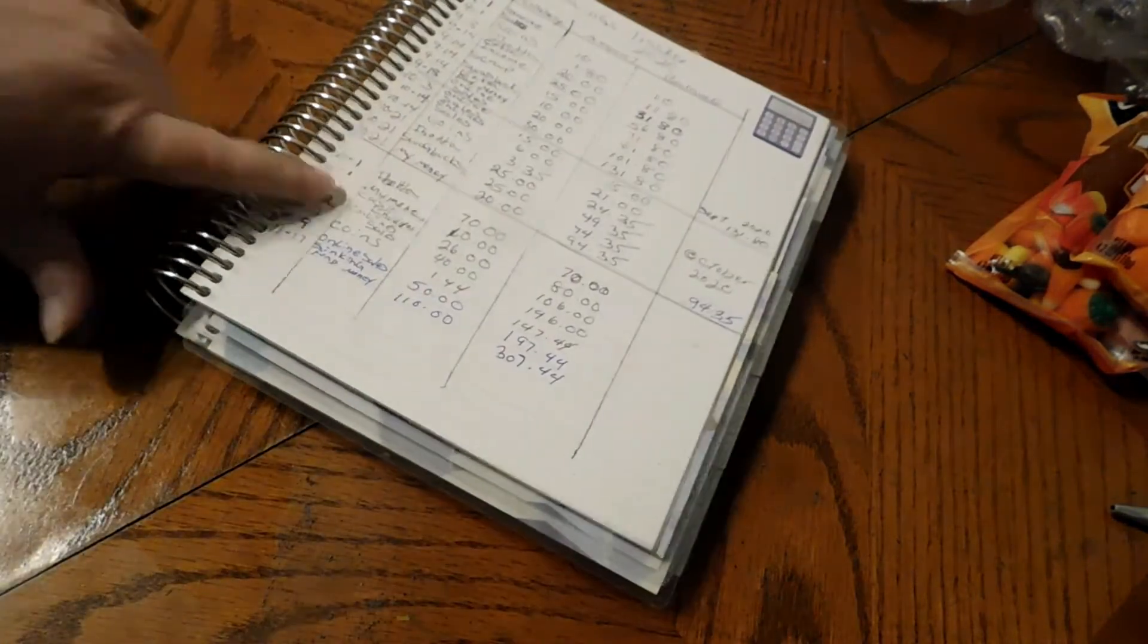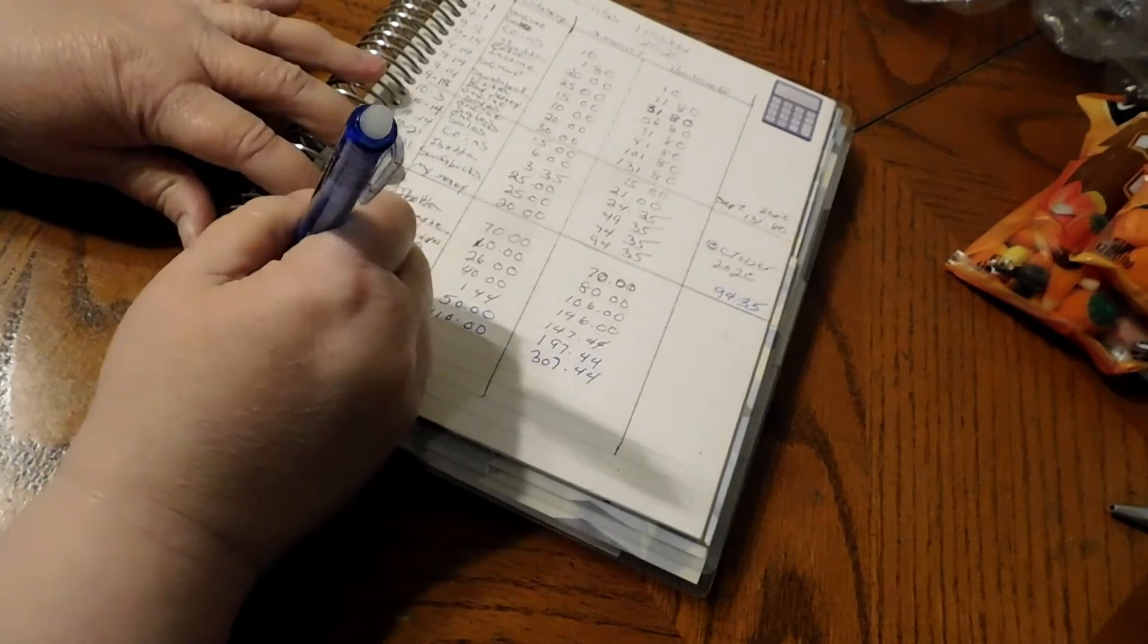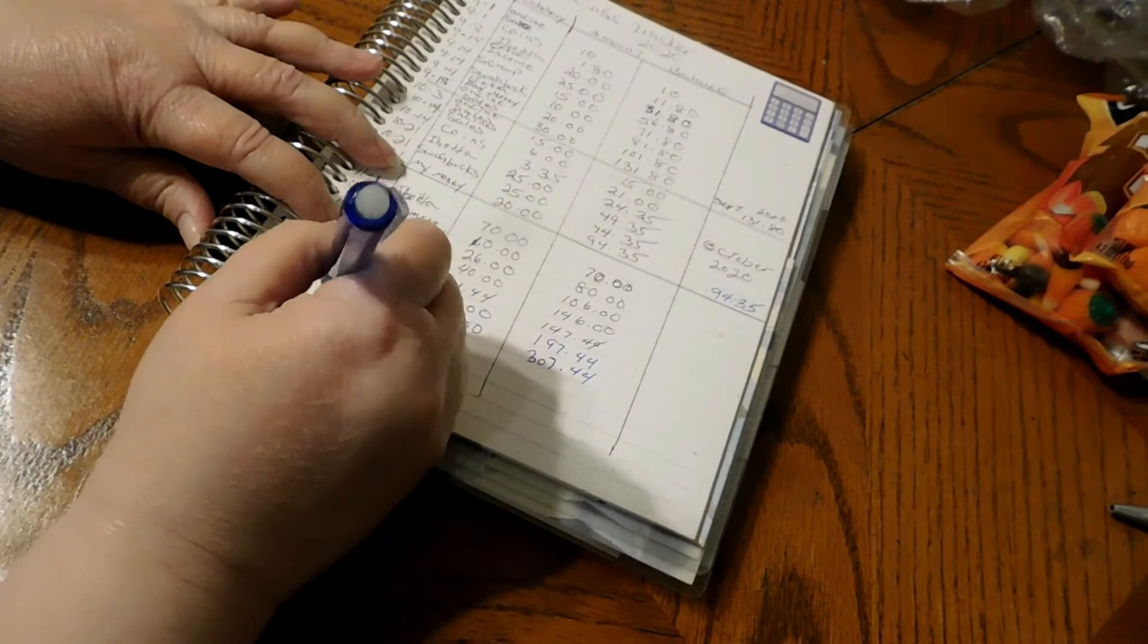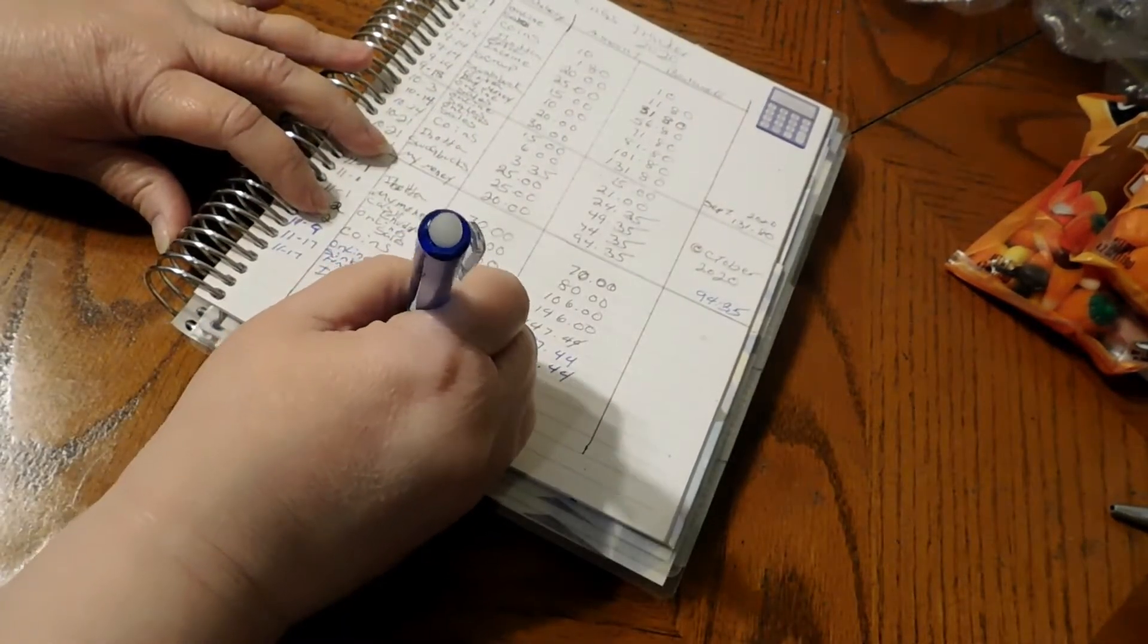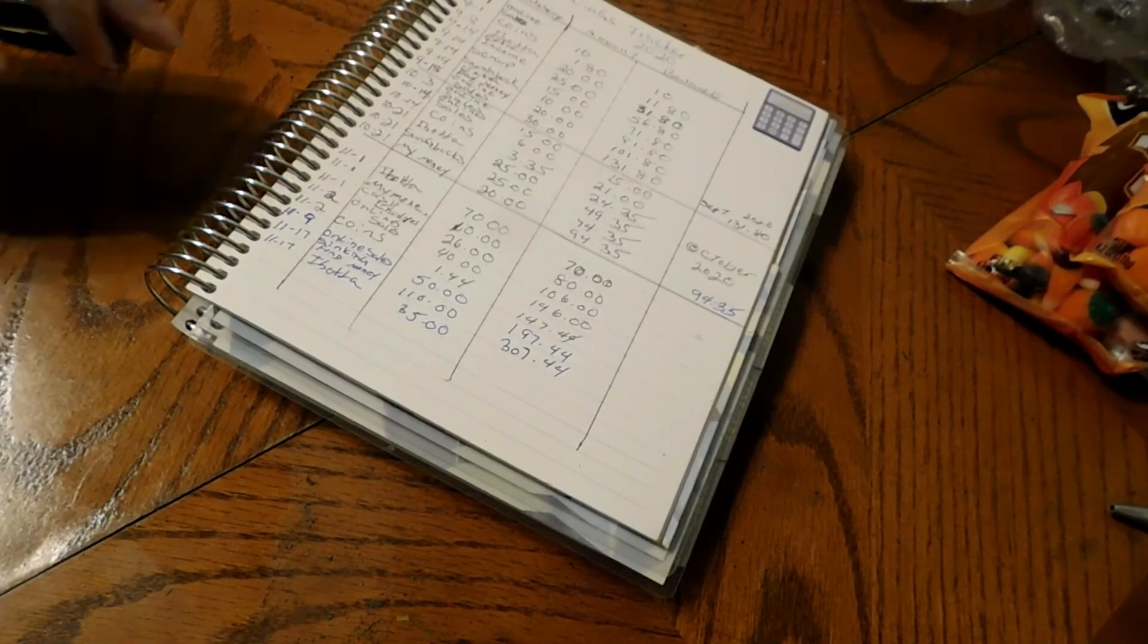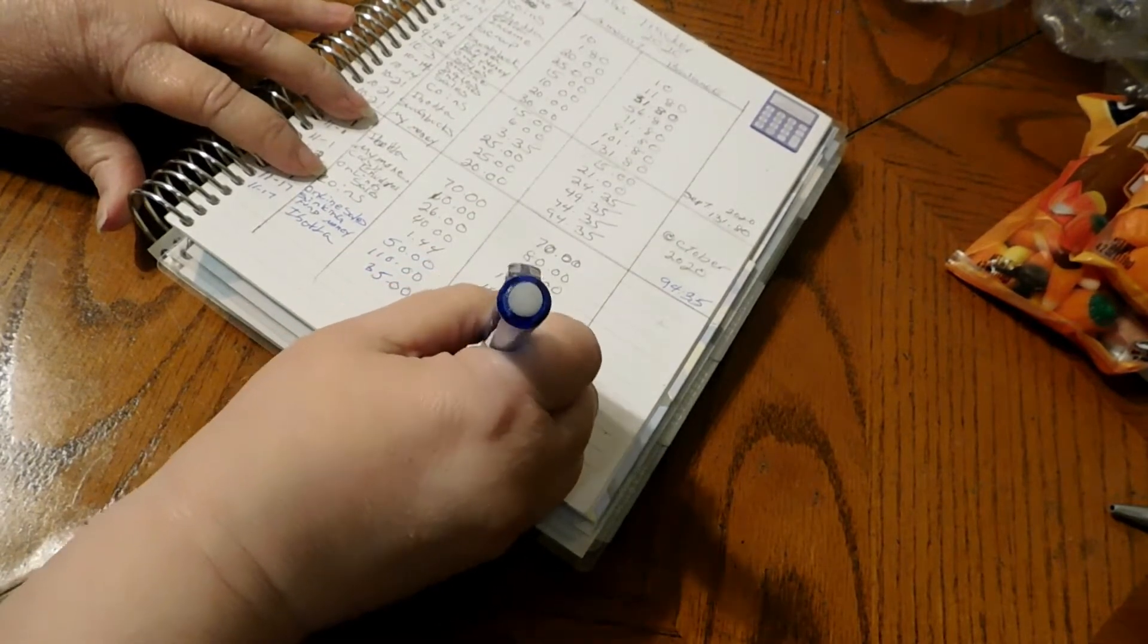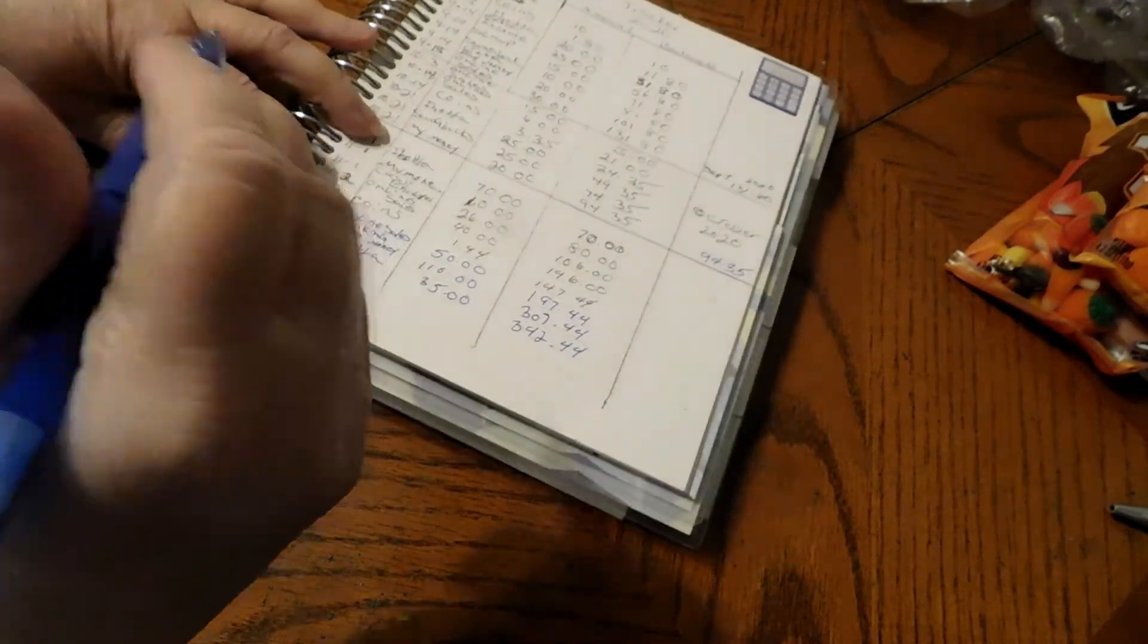That's how much we've made so far in the month of November. Then we had Ibotta. I'm going to just put all this for today's date. We had Ibotta, $35 for Ibotta. So let's plus $35. It's $342.44.